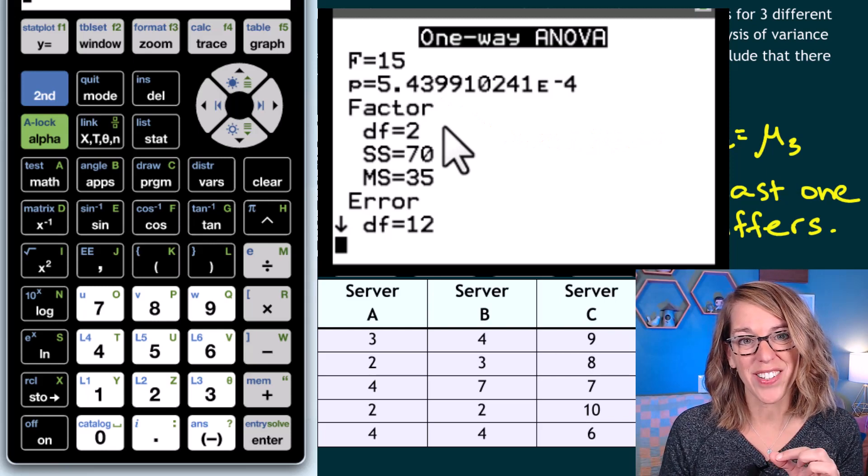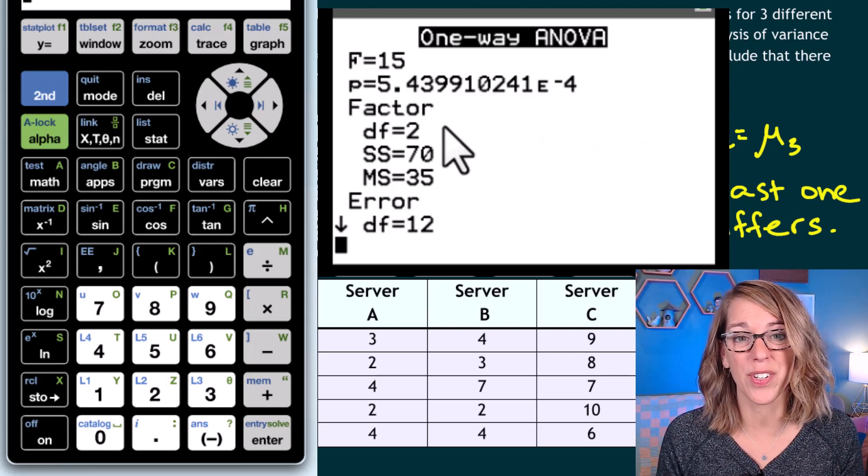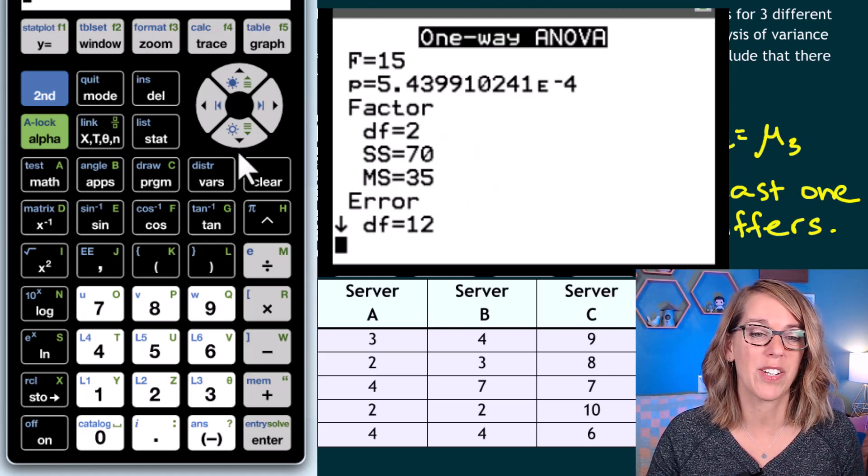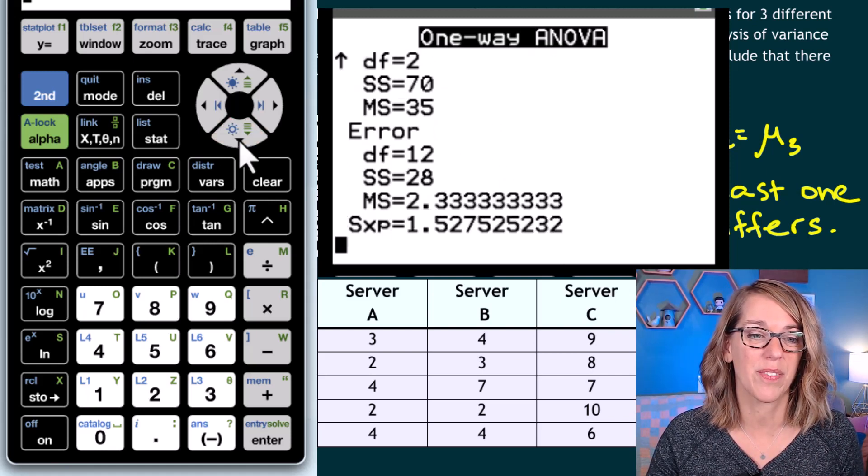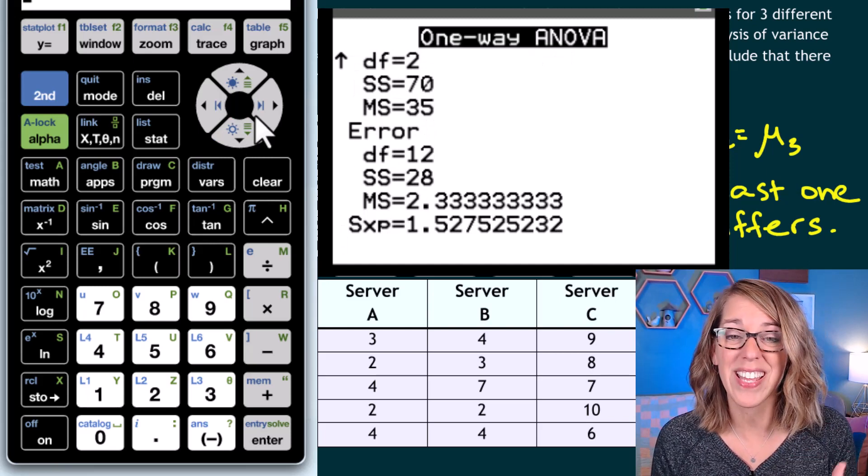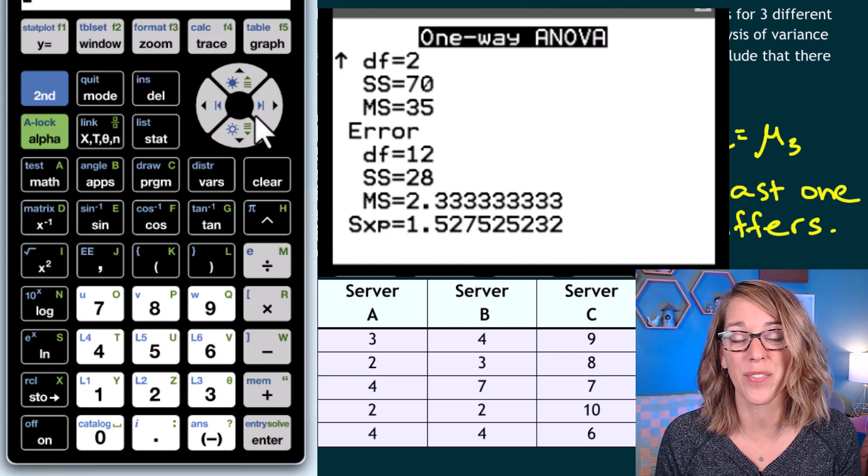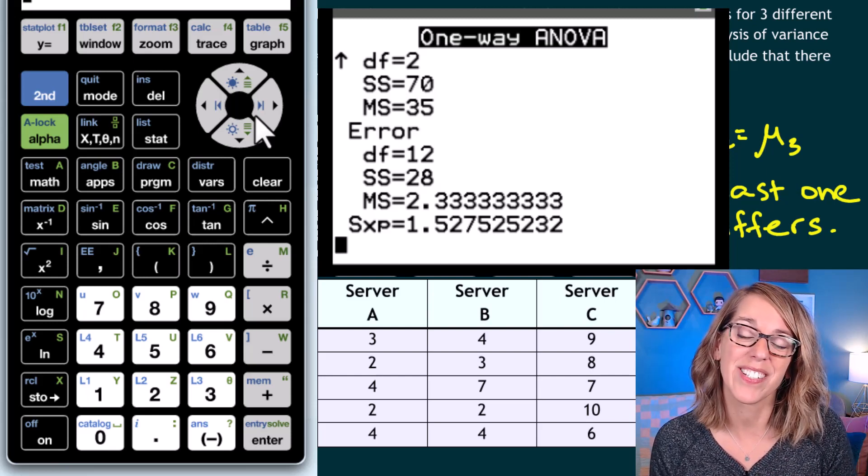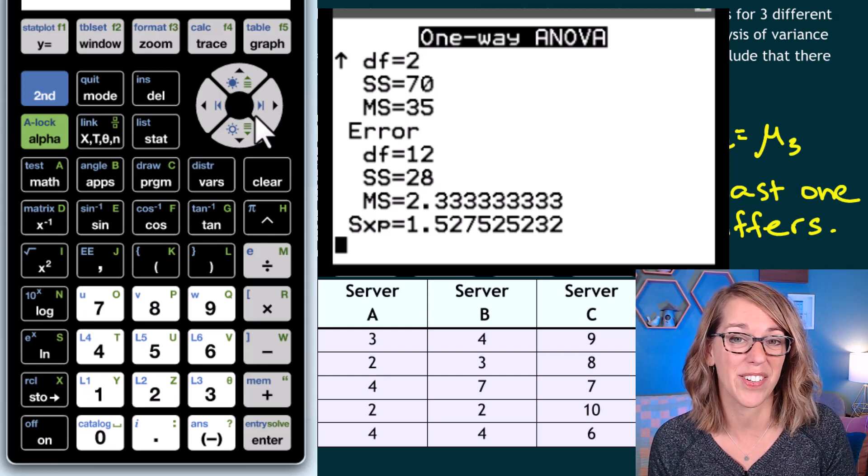The results listed under factor are for the between groups and the degrees of freedom there is the numerator degrees of freedom. As I scroll down, I get some information about the error. I'm going to arrow down to reveal the rest of those results. The information under error are the within groups results. The degrees of freedom there is for the denominator. And then that SXP is going to be the pooled standard deviation.